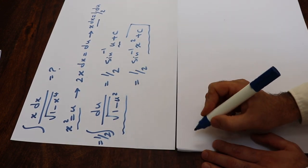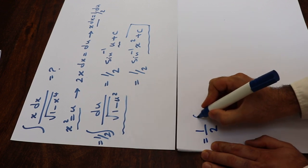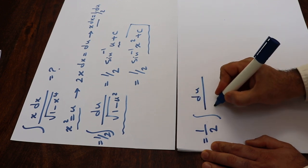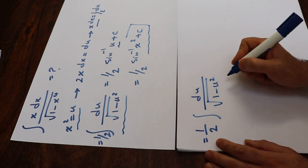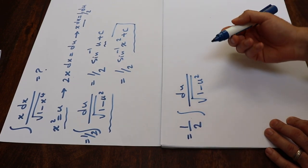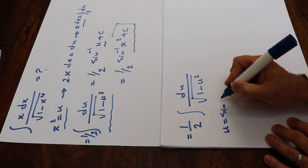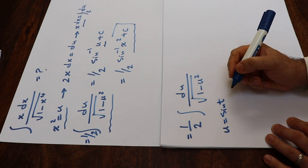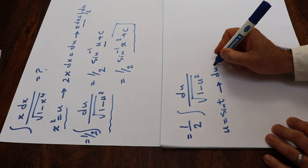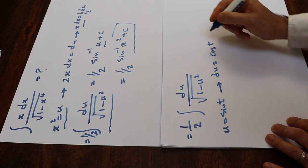So now let's write down this integral one more time: 1/2 times the integral of du divided by the square root of 1 minus u². To solve this integral, we need to again apply the substitution rule. Let's define u as sine(t). If you take the derivative from each side of this equation, du will be equal to cosine(t) dt.